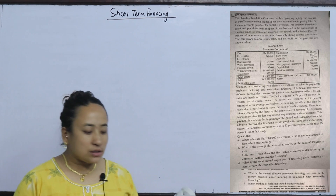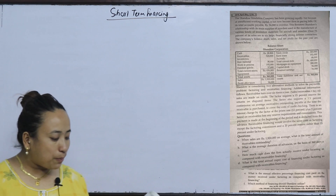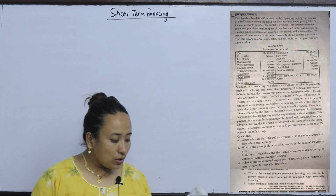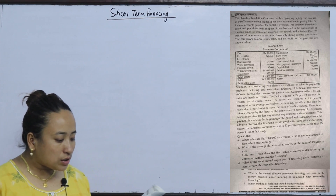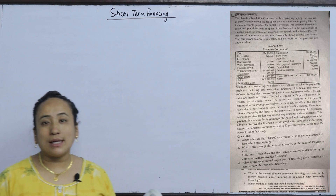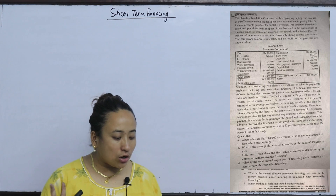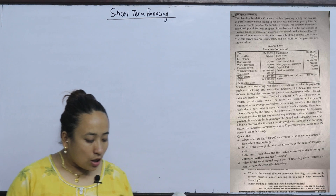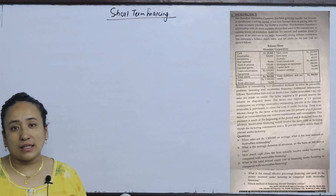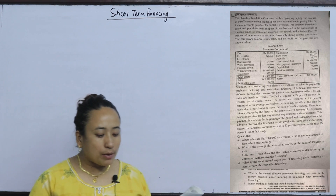The balance sheet is very important information. Sales and net profit for the year are shown. Sando is considering two alternative methods for solving its payment problem: factoring and receivable financing.